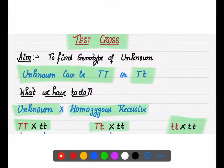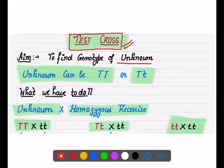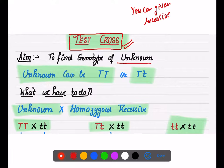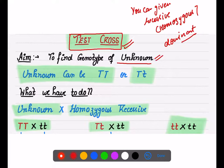First, let's discuss test cross. There are many questions asked about test cross. This cross is used to find out the genotype of an unknown individual. In simple terms, you are given the homozygous recessive genotype and you have to find out the genotype of the dominant version. This cross is mainly used to determine the unknown genotype.